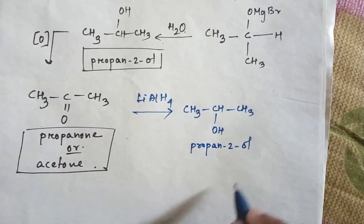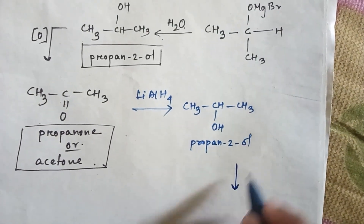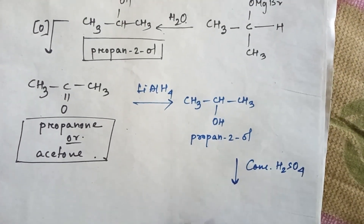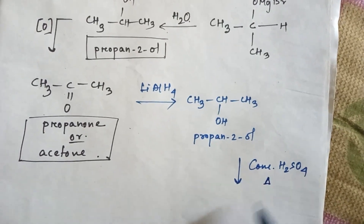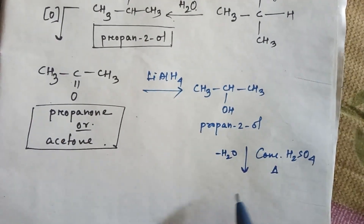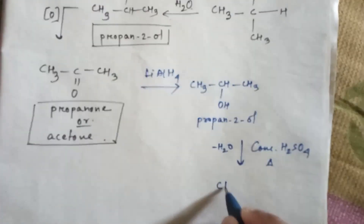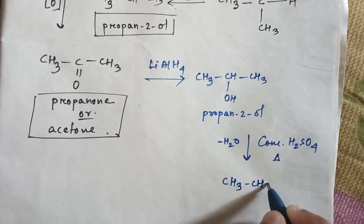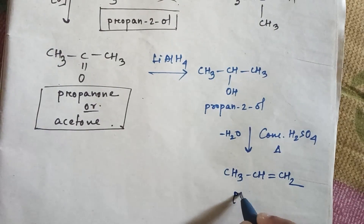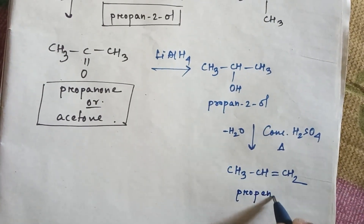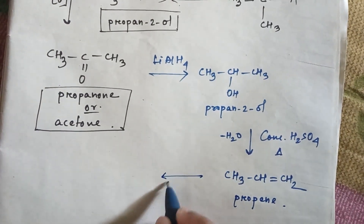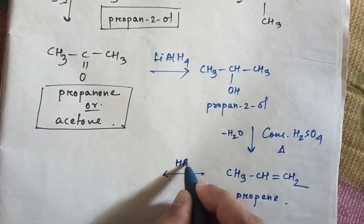Now in this propan-2-ol, if you use concentrated sulfuric acid and then heat, then water will be removed from this product and you will get an alkene — here it is propene.